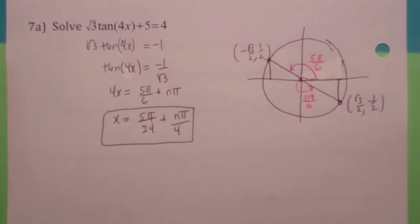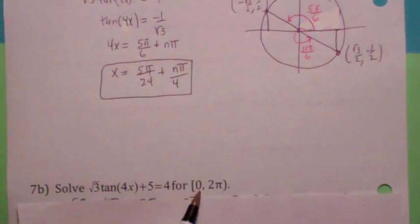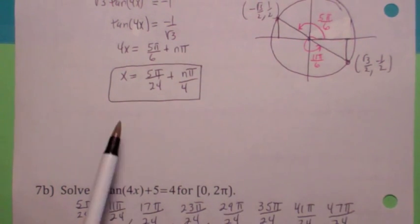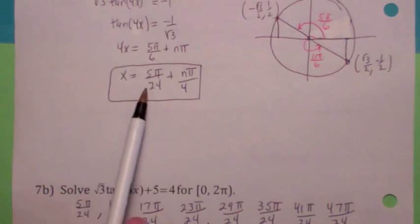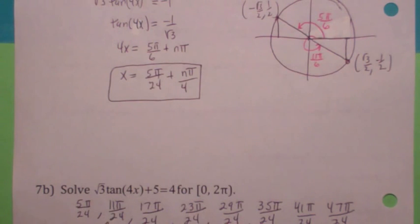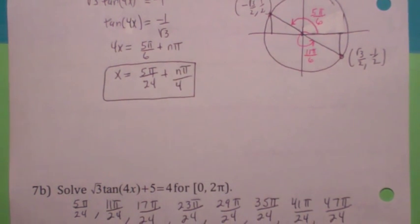On some homework problems, it will ask for only the angles between 0 and 2 pi. What I'd suggest is to go ahead and find all possible angles, then start peeling them off — adding pi over 4 each time — until you exceed 2 pi. The first one is 5 pi over 24. Adding pi over 4 (which is 6 pi over 24) gives 11 pi over 24 when n equals 1. Keep adding 6 pi over 24 each time until you reach a number beyond 2 pi. The last one that works is 47 pi over 24.